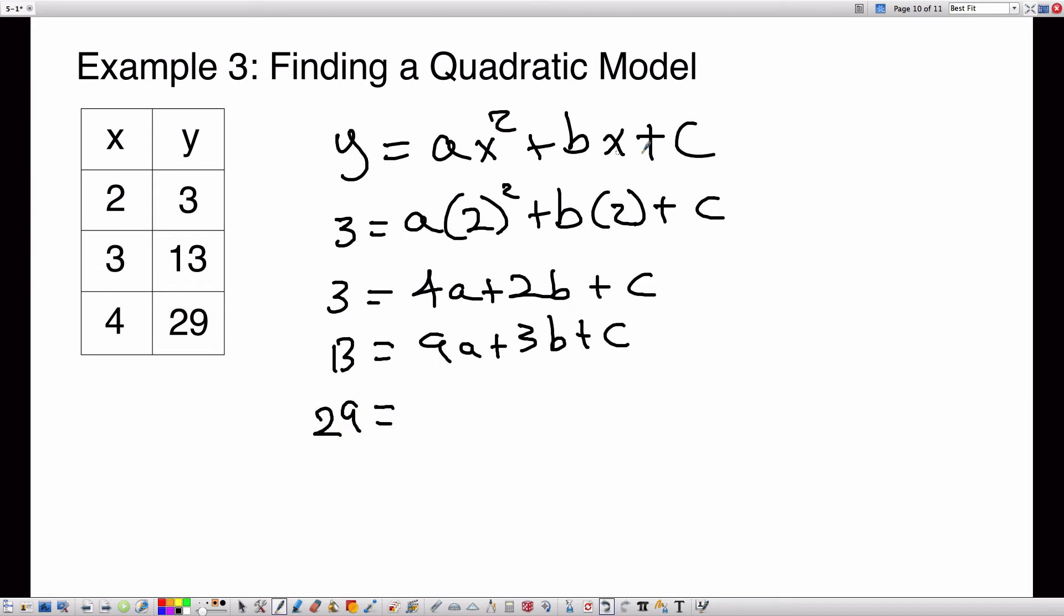4 squared is 16, so we'll have 16A plus B times X, 4 times B plus C. So now I have a system of three equations with three variables, and I can solve this to figure out what A, B, and C are. This should say 4B. Three equations, three variables. I could solve this by substitution or elimination, or I could do it the easy way and use a matrix. So I'm actually going to do that.